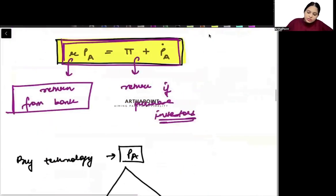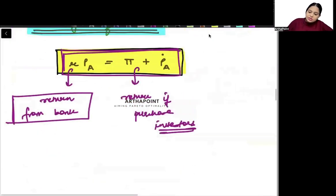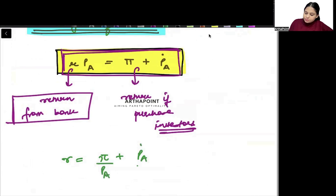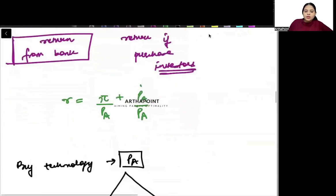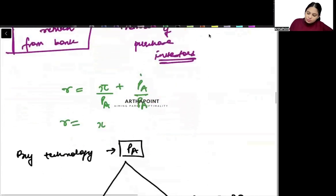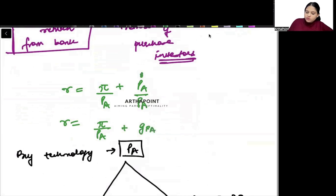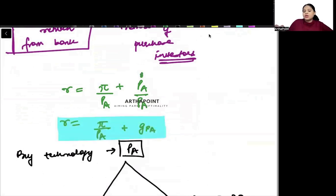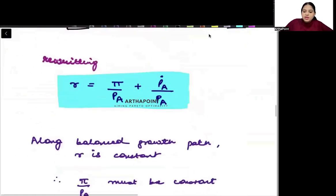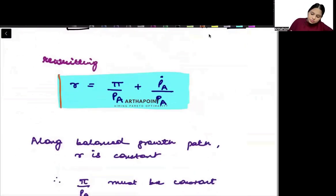If I rewrite this, I get: r is equal to π plus Pa-dot, all upon Pa. So I get r equals π upon Pa plus Pa-dot upon Pa. A change in something divided by its original value is called the growth rate of Pa. So this is my equation for r.